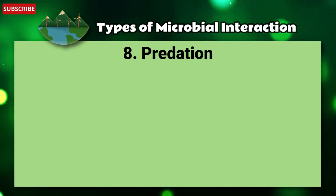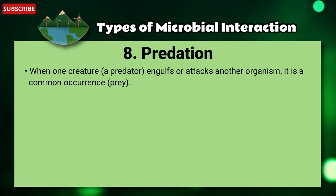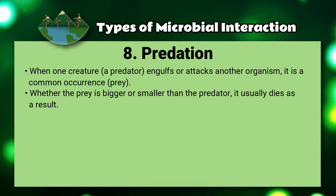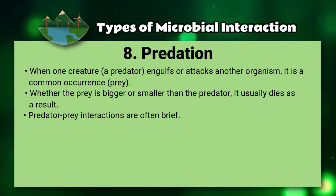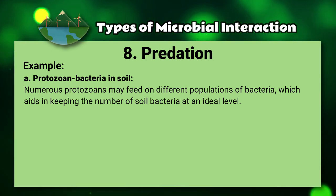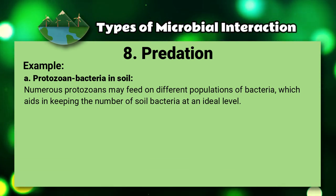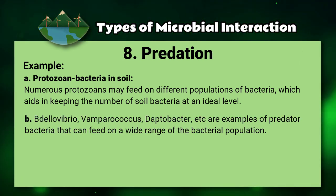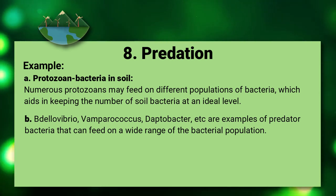Lastly, predation: when one creature (a predator) engulfs or attacks another organism (the prey), it is a common occurrence. The prey usually dies as a result. Predator-prey interactions are often brief. Examples: number one, protozoan-bacteria interactions in soil — numerous protozoans feed on different populations of bacteria, helping to keep soil bacteria at an ideal level. Number two, Bdellovibrio, Vampirococcus, and Daptobacter are examples of predatory bacteria that can feed on a wide range of bacterial populations.